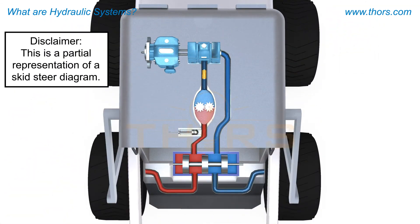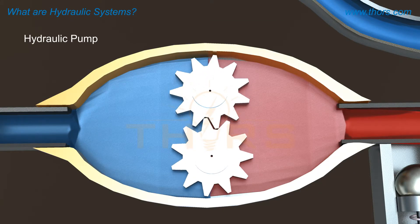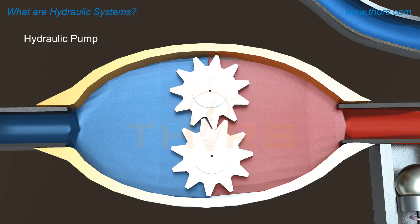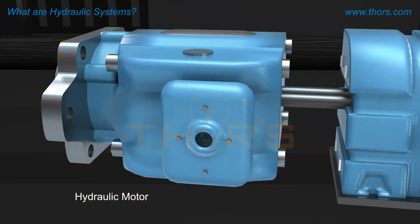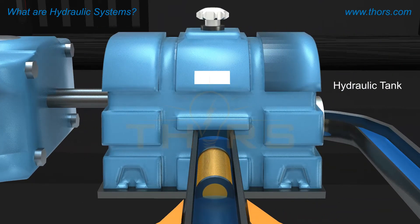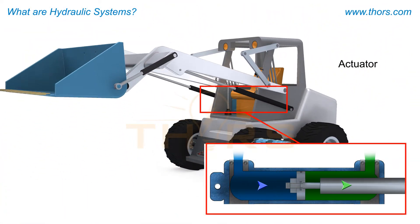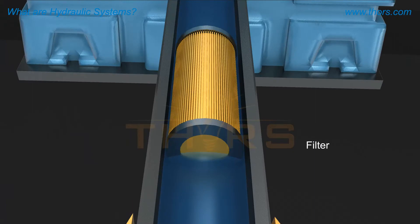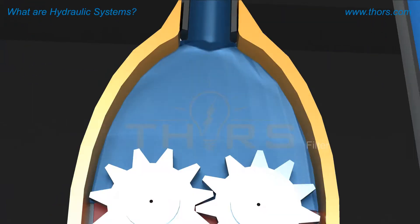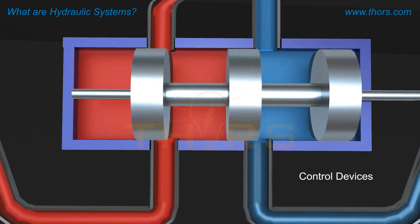The skid steer is made up of the following components. A hydraulic pump is used to turn rotative force into hydraulic flow, typically powered by an engine or driving force. A hydraulic motor is used to convert hydraulic flow and pressure into rotative force. A hydraulic tank is used to store fluid within the hydraulic system. An actuator is a device that converts any flow into motion and pressure into force. A filter is used to remove harmful contamination from the system. Control devices, which include various types of valves, are used to dictate how fluid will move within the hydraulic system.